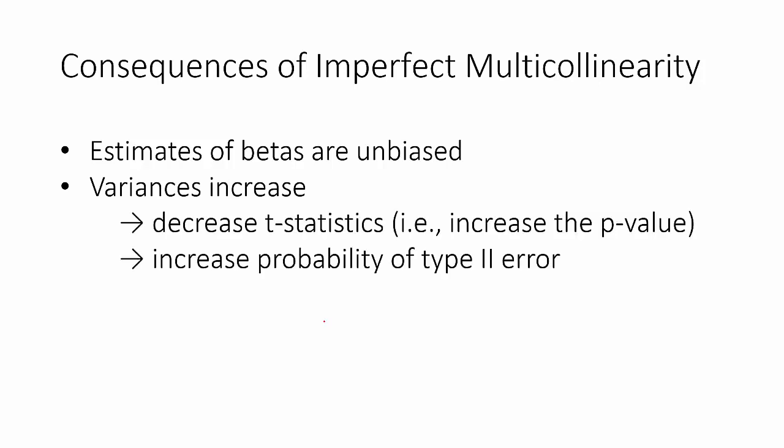Remember, when the variances of the beta hats increase, that decreases our test statistic or our t-score. That's the same thing as saying it increases the p-value. And that increases the probability that we will commit a type II error.